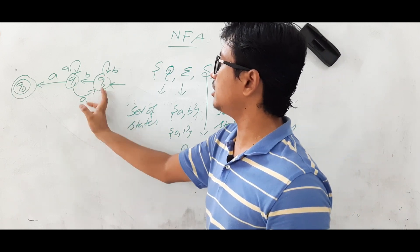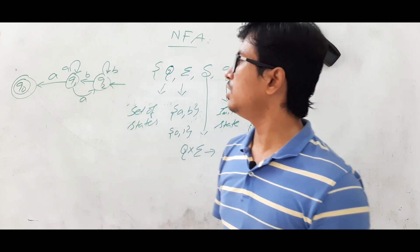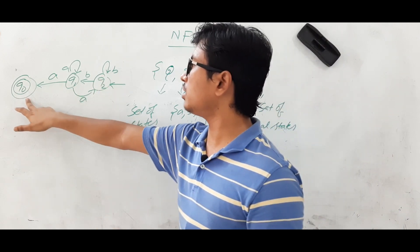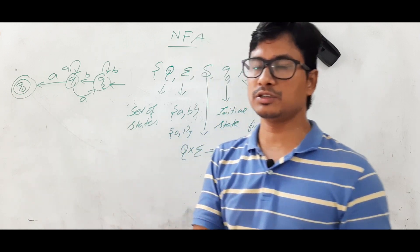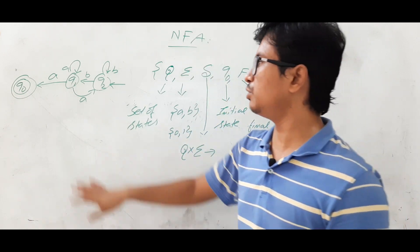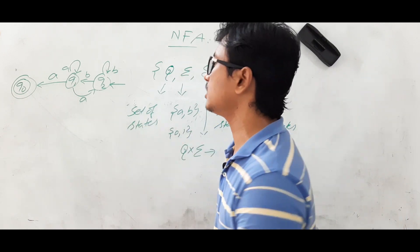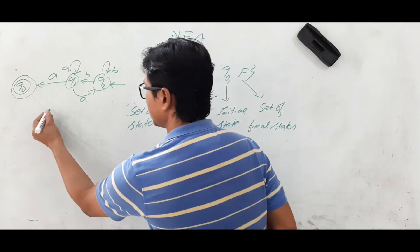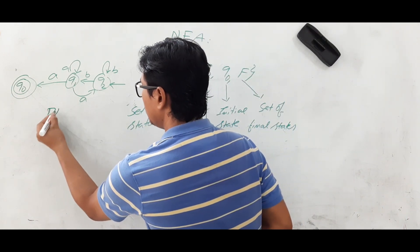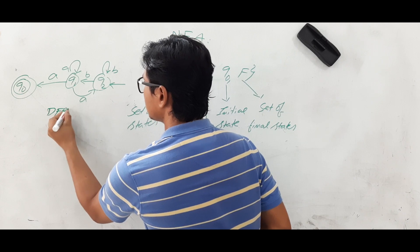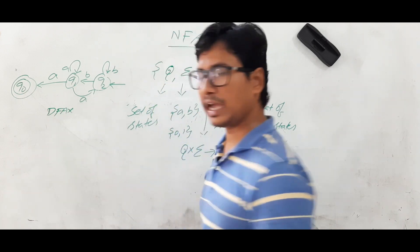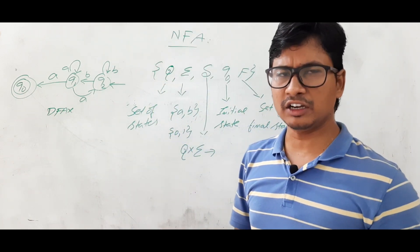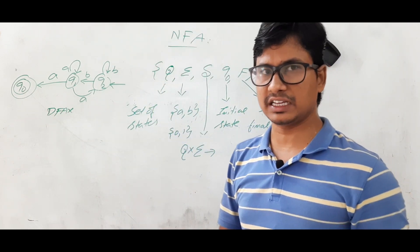Why is it not a DFA? Because q₂ on 'a' has no move, and q₀ on 'a' and 'b' also has no move. So we can say that it is not a DFA.